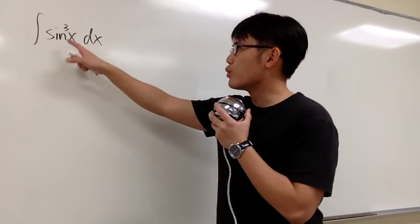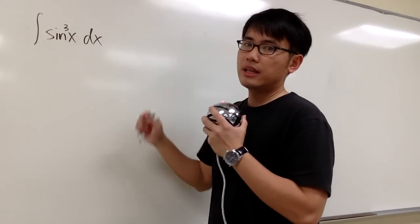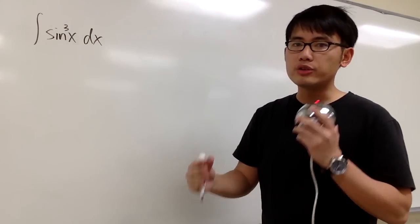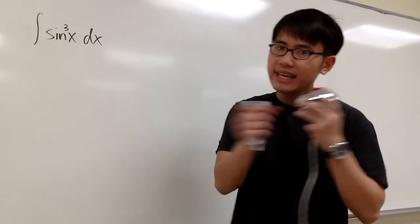We are going to look at the integral of sine to the third power x. This is an odd power situation, so what we can do is we can take out one of the sine.